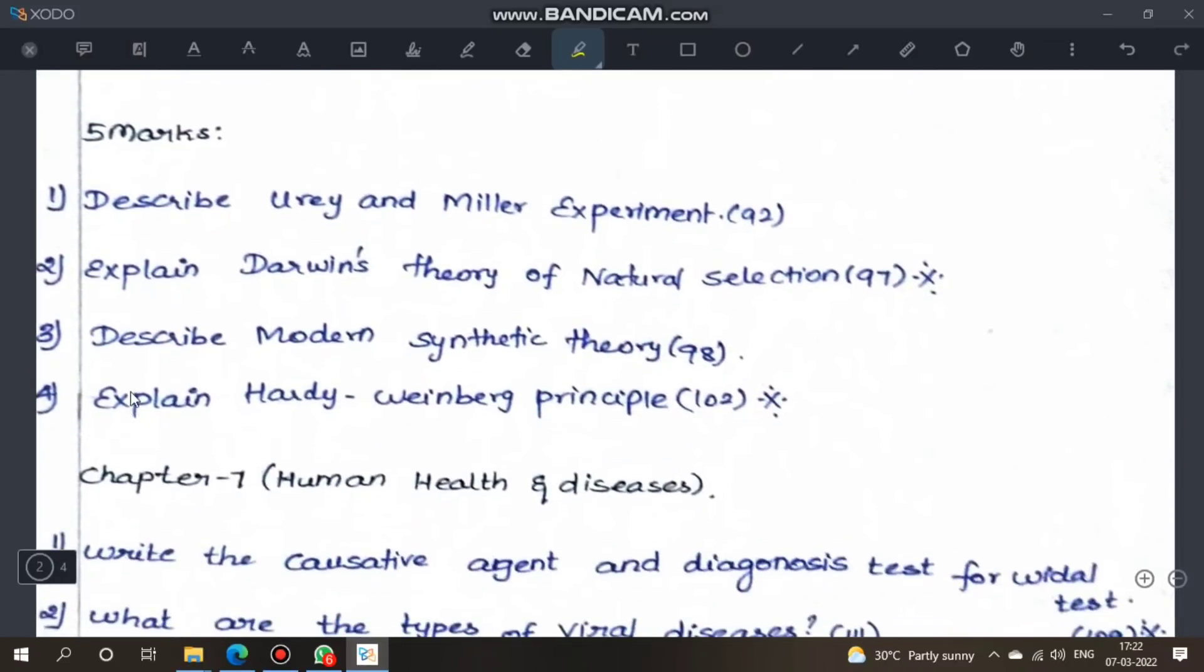Five marks: Describe Urey and Miller experiment, page 92. Explain Darwin's theory of natural selection, important five mark. Describe modern synthetic theory, page 98. Explain Hardy-Weinberg principle, important. Darwin's theory, Hardy-Weinberg, modern synthetic theory are all important.